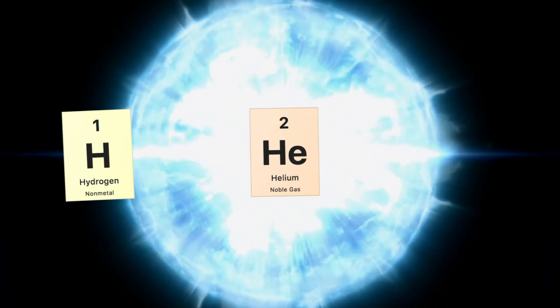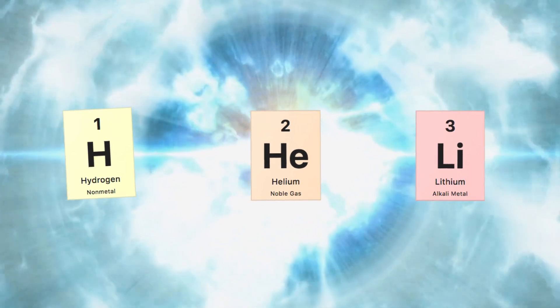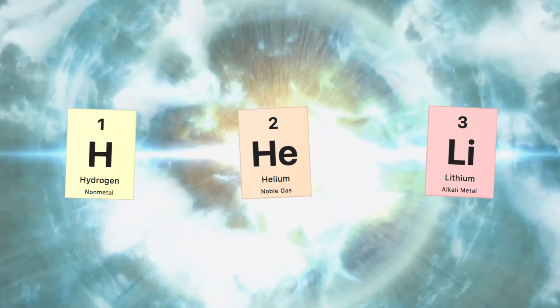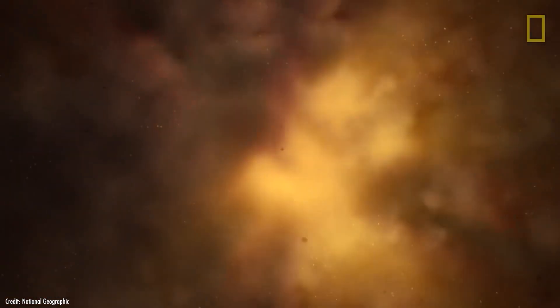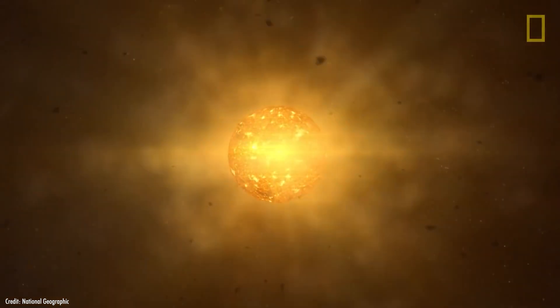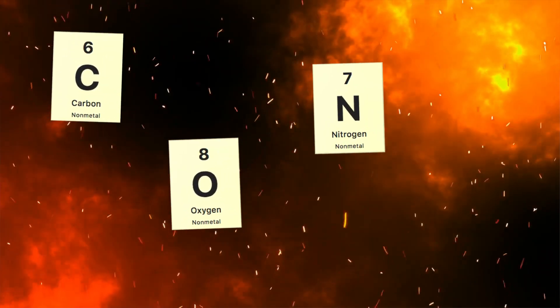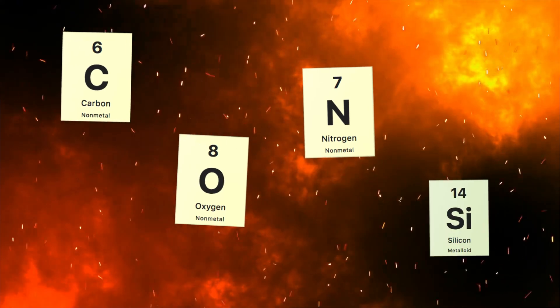The Big Bang Theory suggests that a Big Bang created gases like hydrogen and helium, and even trace amounts of lithium, but nothing to make minerals out of quite yet. These elements eventually combined to form young stars.